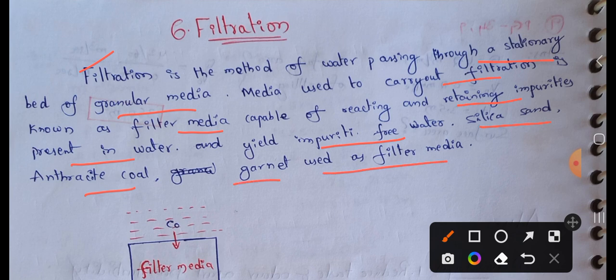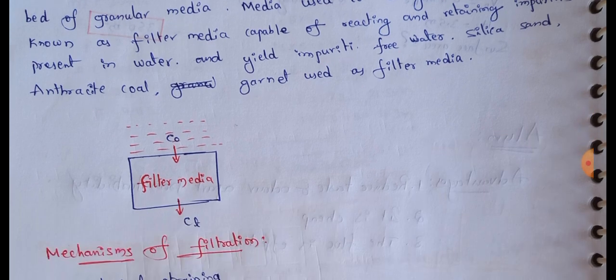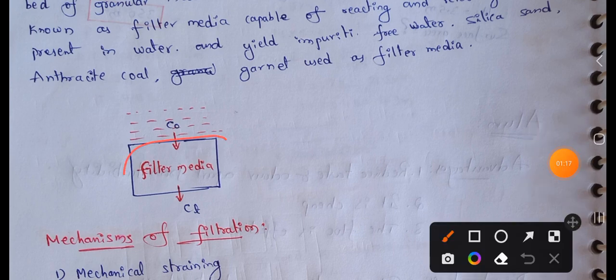The filter media consists of silica sand, anthracite coal, and garnet. Garnet means green sand. The filter bed contains fine aggregates — sand is present, including silica sand, anthracite coal, and garnet at the top layer. Next, coarse aggregates form a well-graded aggregate layer.